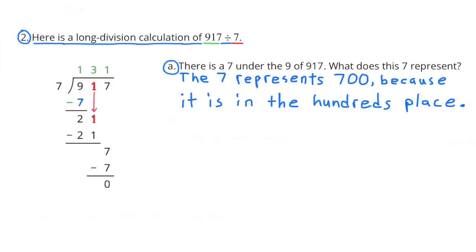Number 2. Here is a long division calculation of 917 divided by 7. A, There is a 7 under the 9 of 917. What does this 7 represent? The 7 represents 700 because it is in the 100s place.